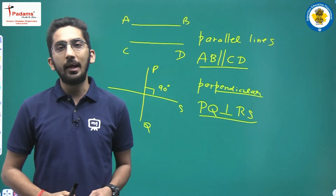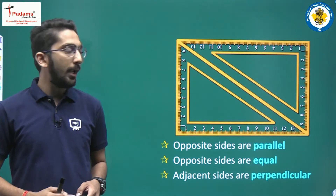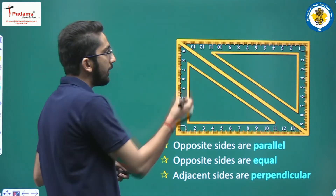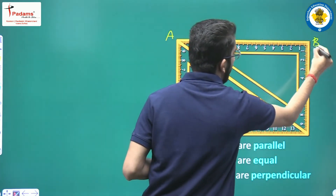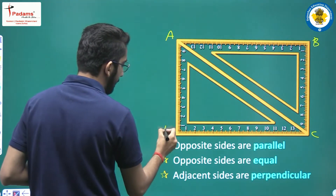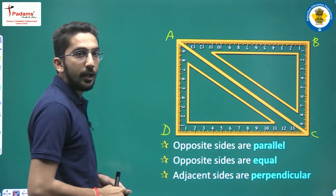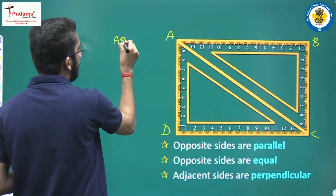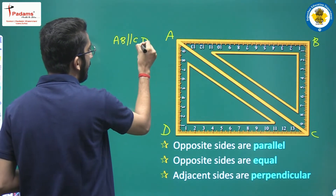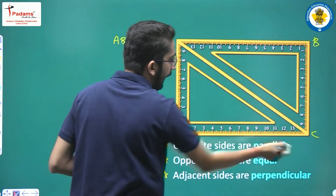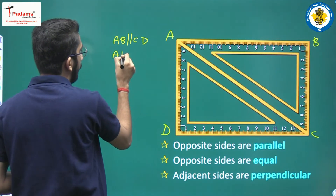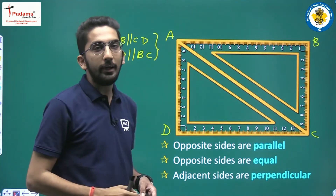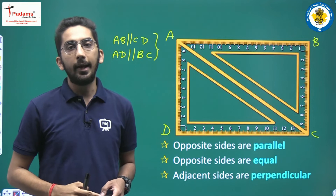Now let's look at rectangle properties. The first property is that opposite sides are parallel. If I name this rectangle ABCD, then the opposite sides are parallel: AB is parallel to CD, and AD is parallel to BC.